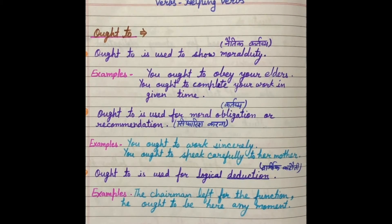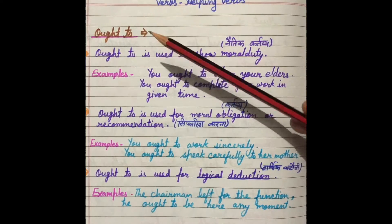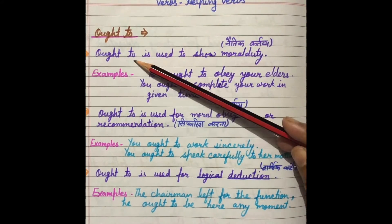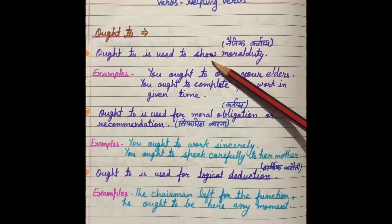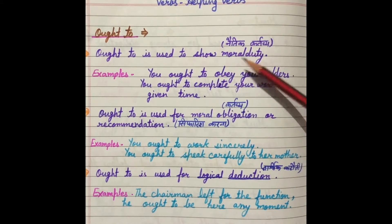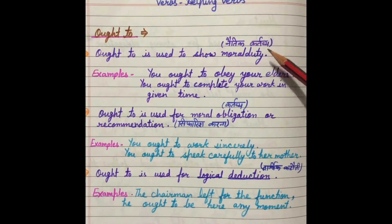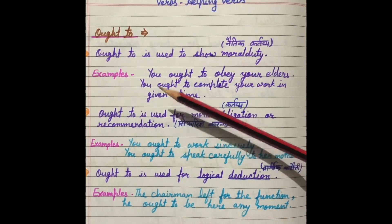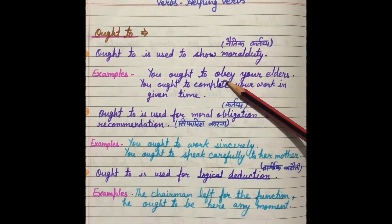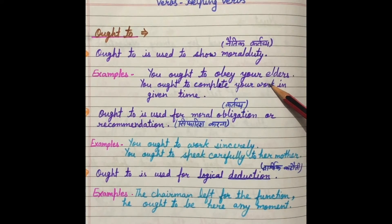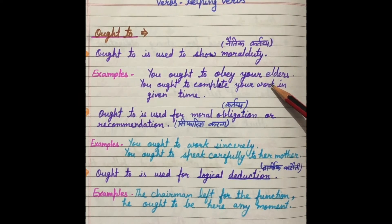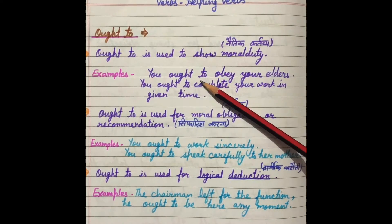So let's get started with 'ought to'. Ought to is used to show moral duty — हमारी जो moral duties होती हैं, जो नैतिक कर्तव्य होते हैं, उनके लिए हम ought to use करते हैं. For example: 'You ought to obey your elders.' This is our moral duty — हमें अपने elders का कहना मानना चाहिए, उनकी आज्ञा माननी चाहिए. For this, we use ought to.